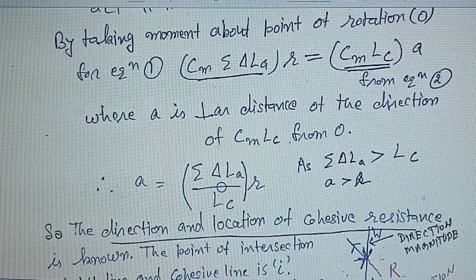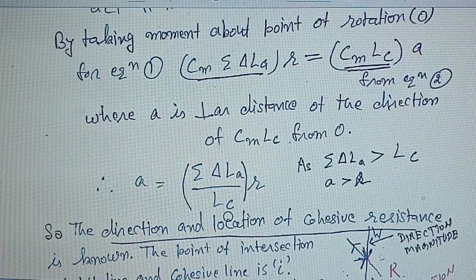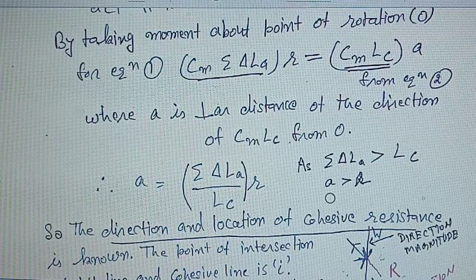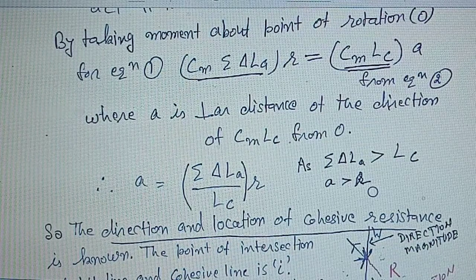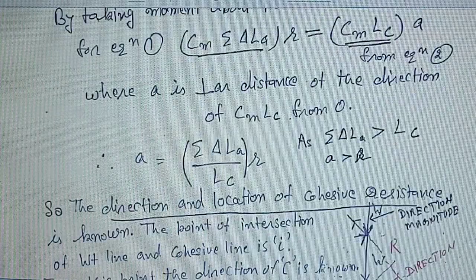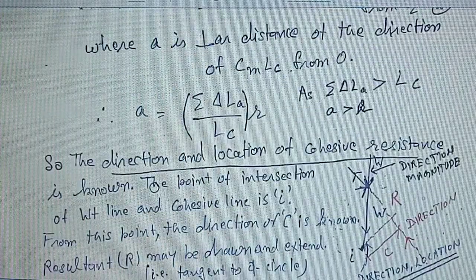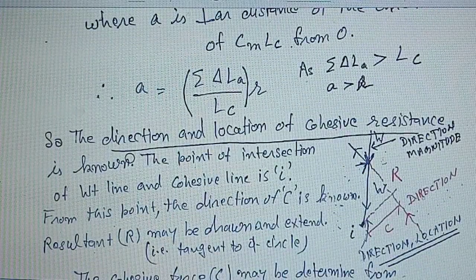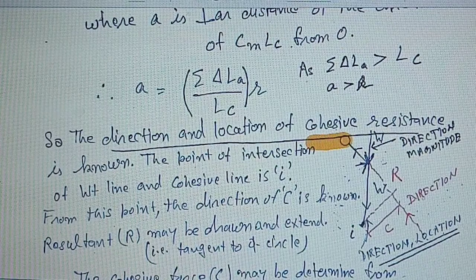As we know, the length of the arc is greater than the length of the chord, so the value of A is greater than R. By knowing the value of A, we can determine the direction as well as the location of cohesive resistance.